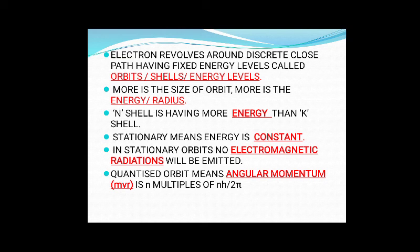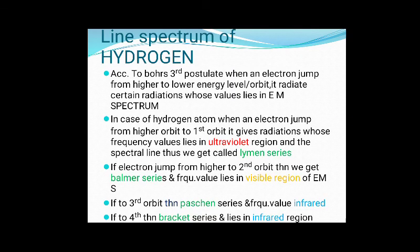Today's topic is to discuss the line spectrum of hydrogen. According to the third postulate of Bohr's atomic model, when an electron jumps from a higher to a lower energy level, it always radiates certain radiation whose values lie in the electromagnetic spectrum. Whenever any electron jumps from a higher to a lower energy level, it always radiates out certain radiation whose frequency lies in the electromagnetic spectrum.